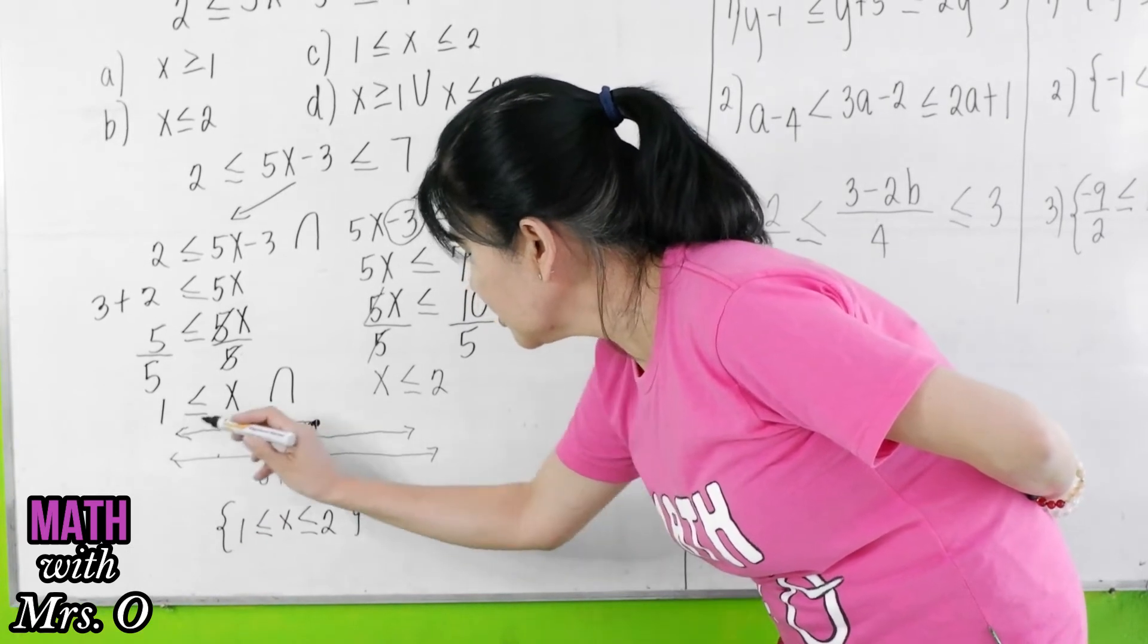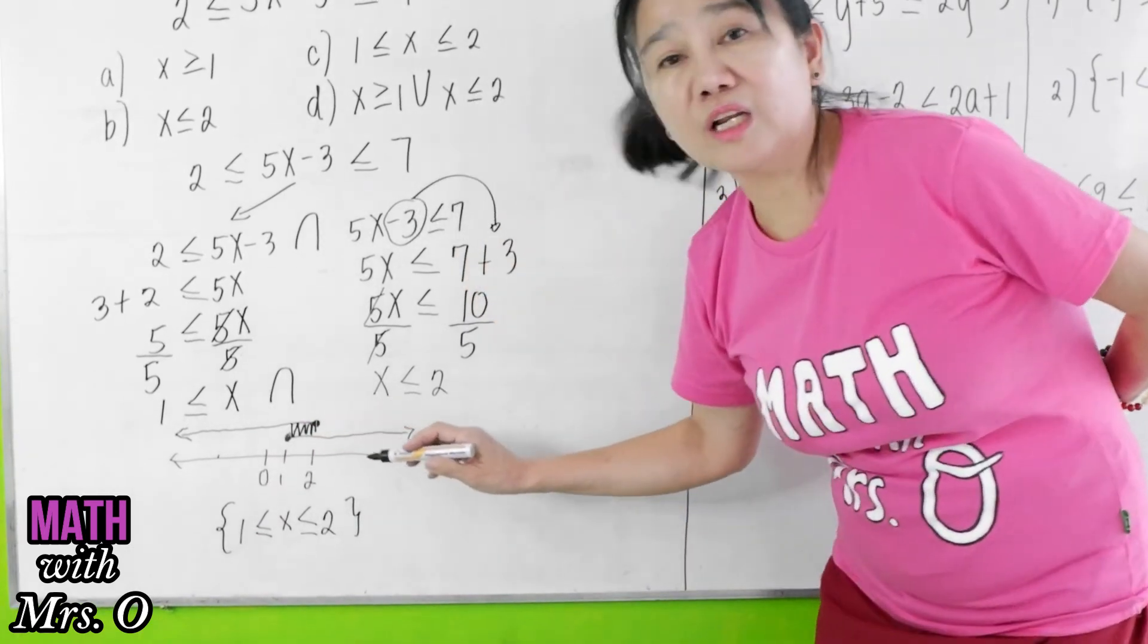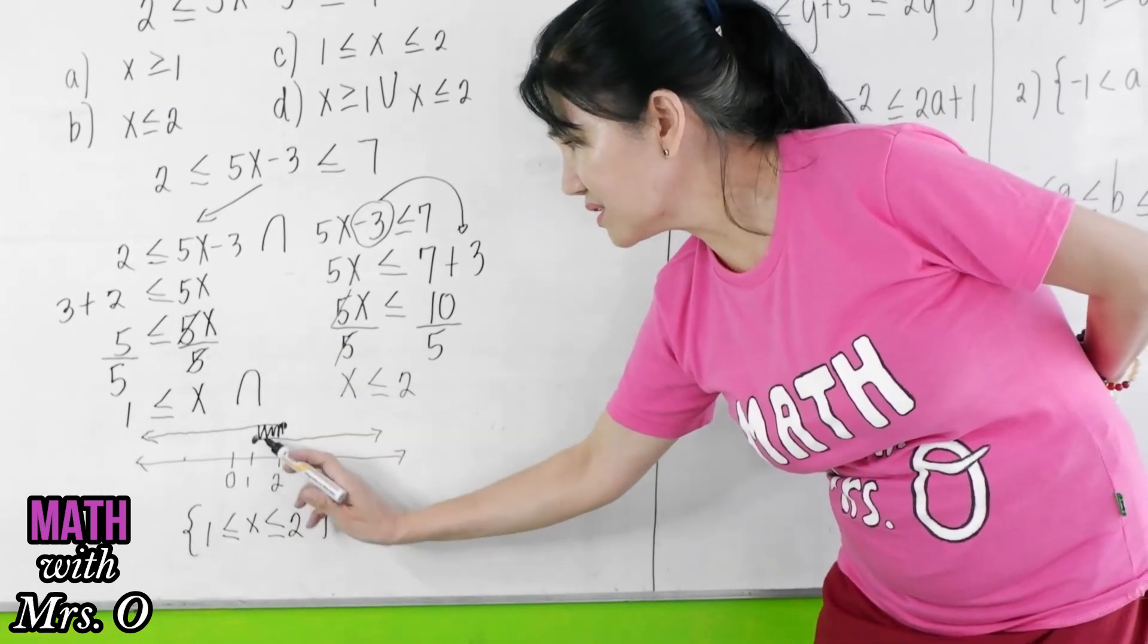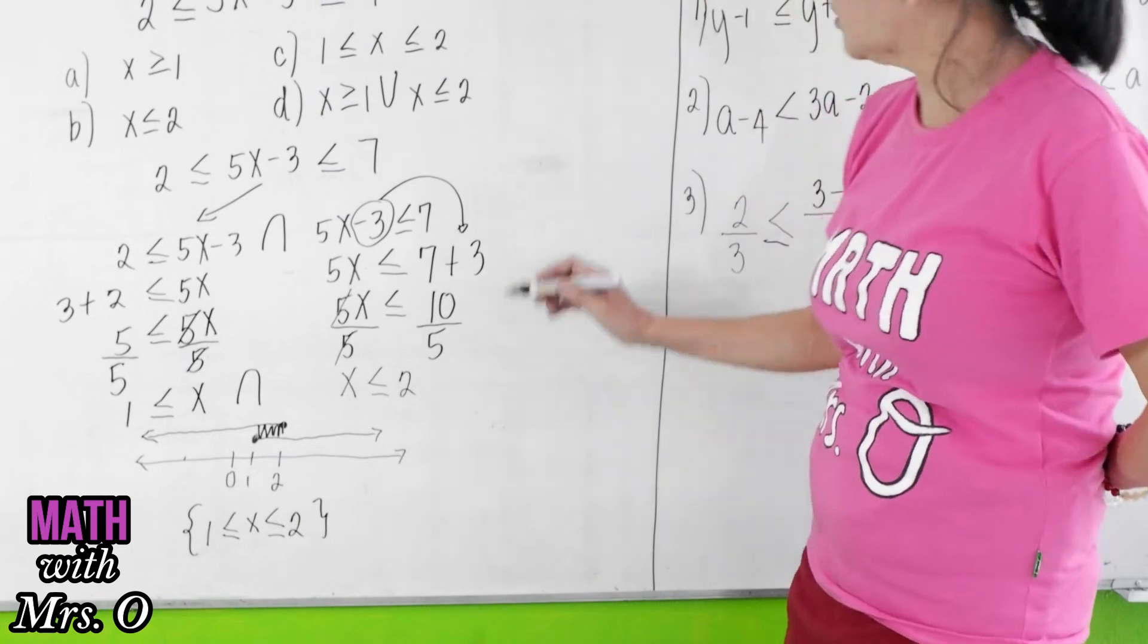As you can see, the two graphs overlap from 1 to 2. So you write there x is greater than or equal to 1 and less than or equal to 2.